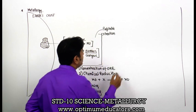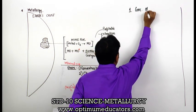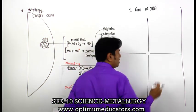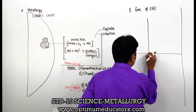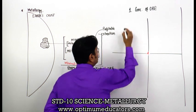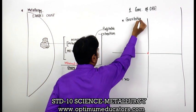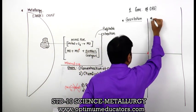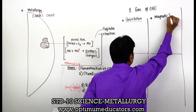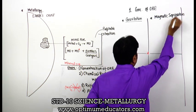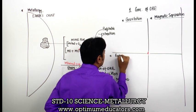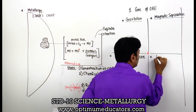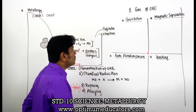For concentration of ore, I have four methods. The first method is by using gravitation - using weight for separation. The second method is magnetic separation. The third is the very important froth flotation process. The fourth is the leaching process. Let us start with the first one, gravitation.